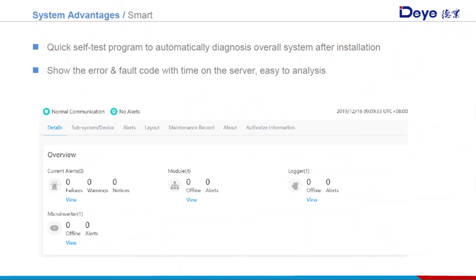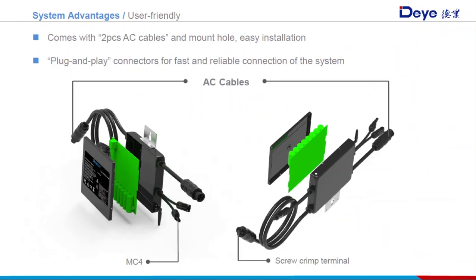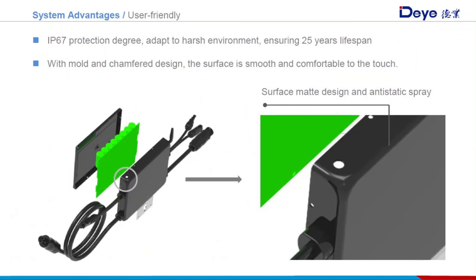When a fault occurs, the indicators of the microinverter will blink red, and a fault code will be shown on the platform. Deye microinverters come with two AC ports to make installation easier and faster. With IP67 protection, they can adapt to harsh environments. Thanks to the modular chamber design, the microinverter surface is smooth and comfortable.